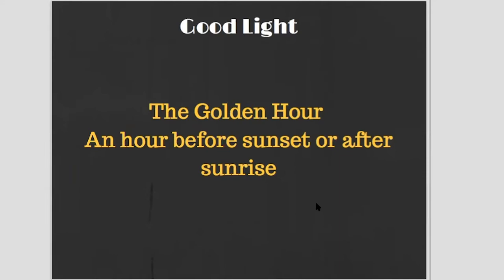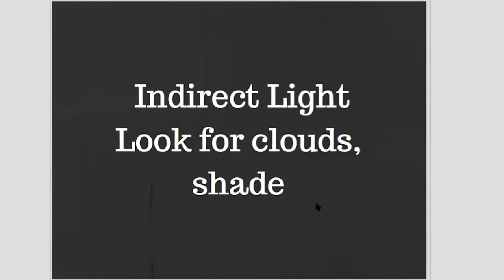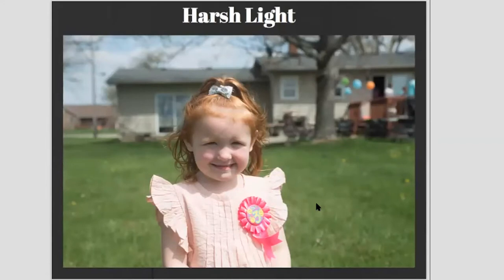If you can't do the golden hour and it's the middle of the day, look for indirect light. Look for clouds — if you want to take a photo of a person on a cloudy day, wait for a cloud to come over. Look for shade — put the person under a tree or inside a doorway for some indirect light. A lot of people take selfies in a car because they love the light in there. The light is indirect, coming in from all sides, bouncing around — it's not harsh.